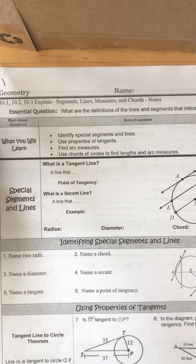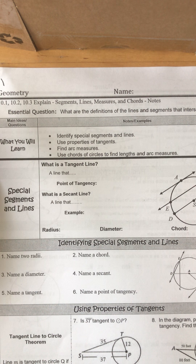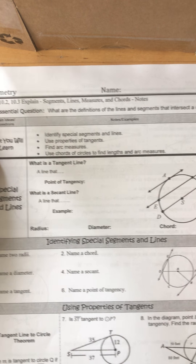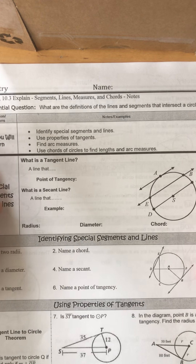So the definitions we're going to be talking about: we're going to be identifying special segments and lines, using properties of tangents, finding arc measure, and then using chords and circles to find lengths and arc measures. Starting off with some identification and definitions — special segments and lines.